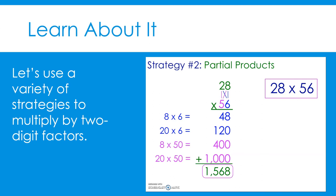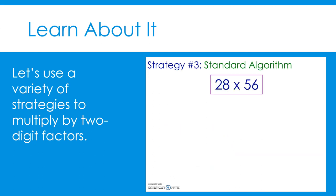48 plus 120 plus 400 plus 1,000 equals 1,568. That is our product again. Finally, let's solve 28 times 56 using the standard algorithm. The multiplication standard algorithm for two-digit numbers is a strategy that you will master in fifth grade, so here we will preview this strategy. This multiplication strategy is not a requirement for fourth graders.